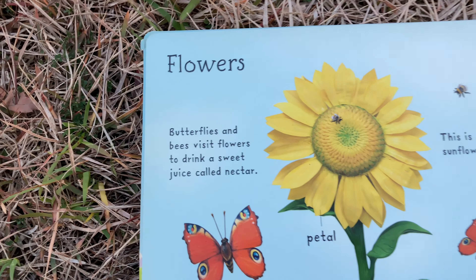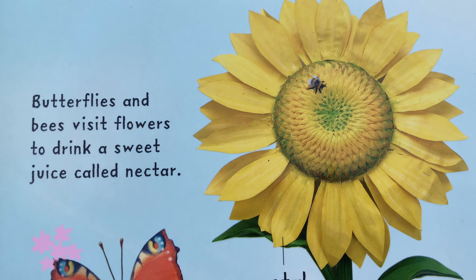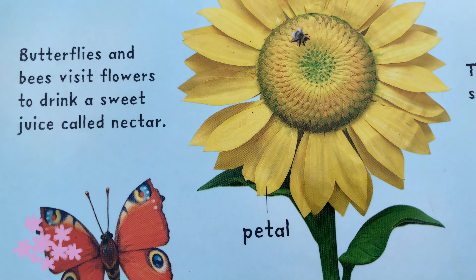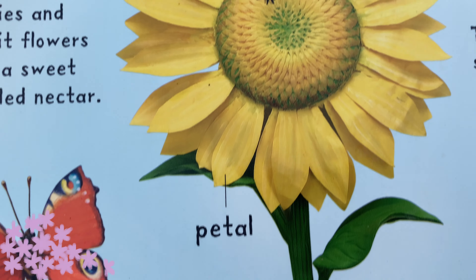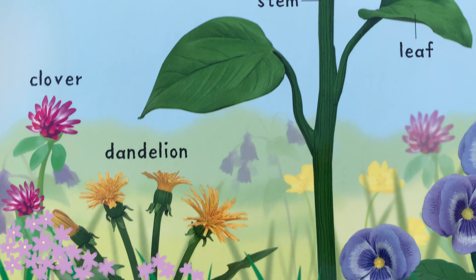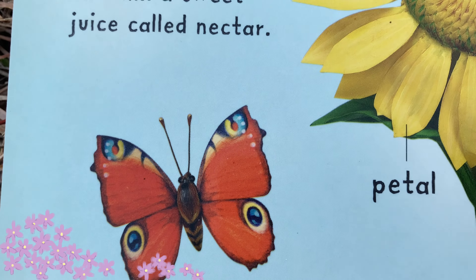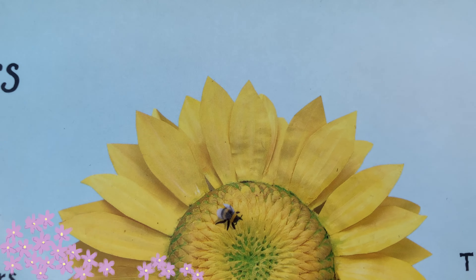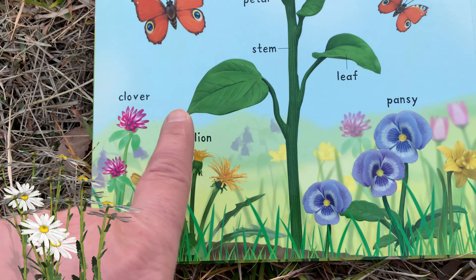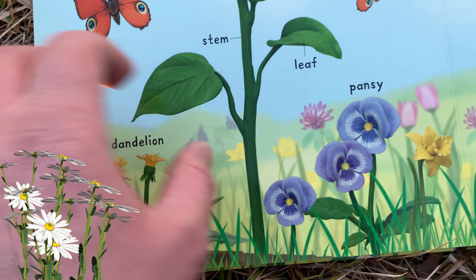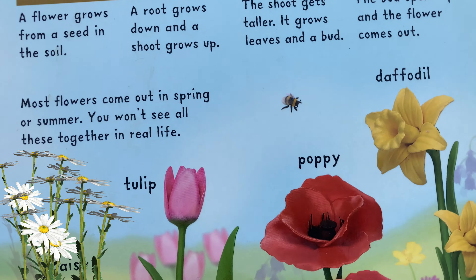Flowers! Butterflies and bees visit flowers to drink a sweet juice called nectar. They drink from the flower — butterflies fly around with it, and bees bring it back to their hives. Look at all these different flowers: clover, pansy, poppy — that was in the Wizard of Oz, wasn't it? — tulip.